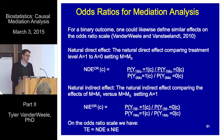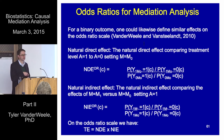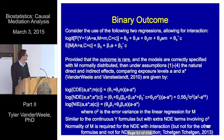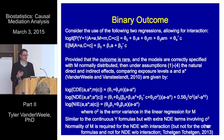Importantly, when we move to the odds ratio scale, the total effect odds ratio now decomposes into the product of the natural direct and indirect effect odds ratios, rather than the sum. So our definitions are analogous, but now on the odds ratio scale.